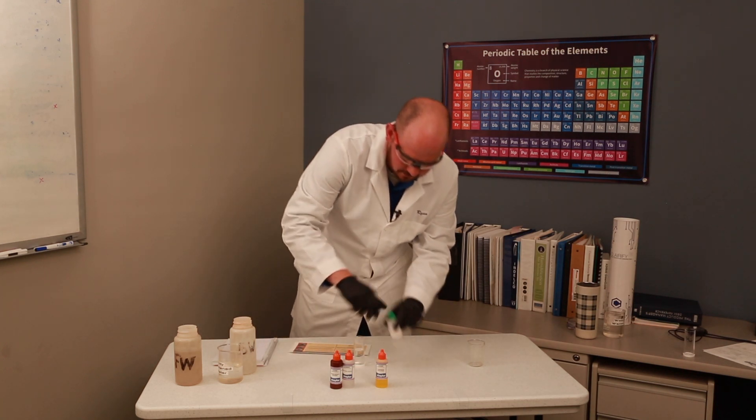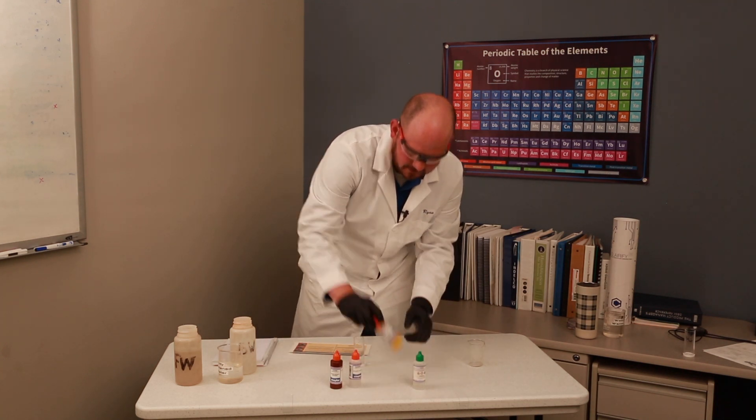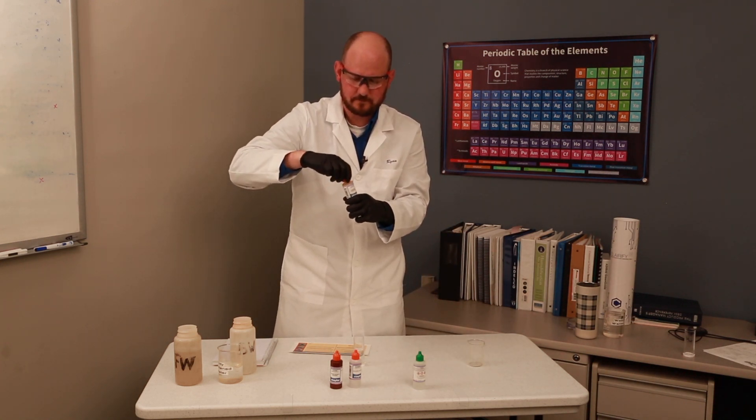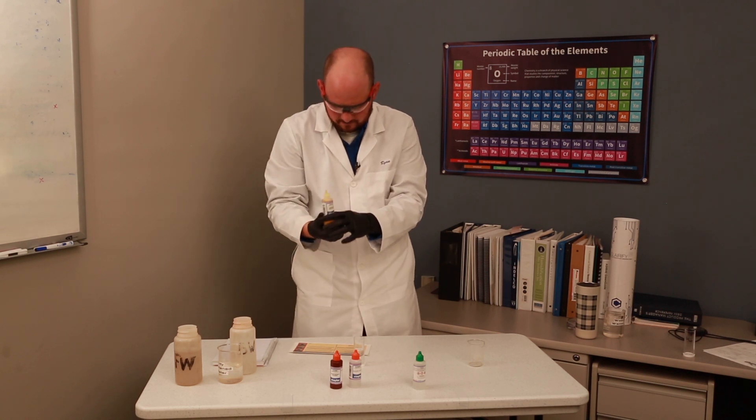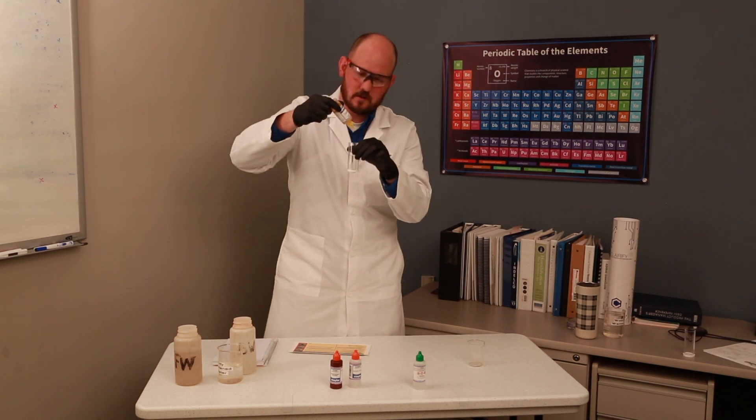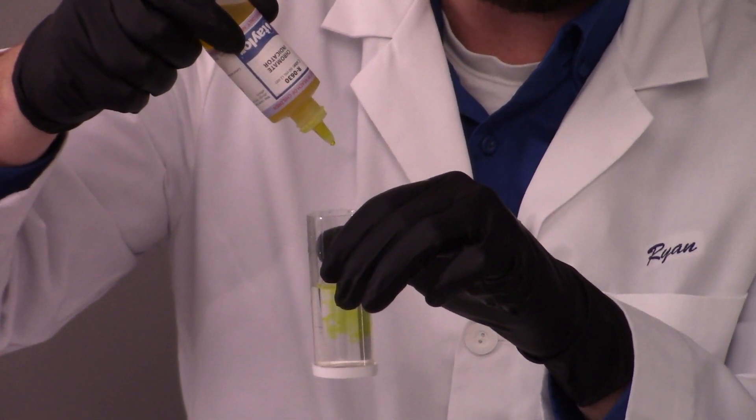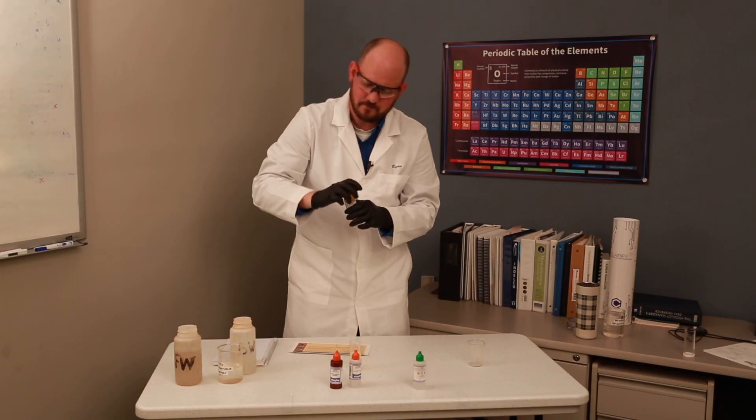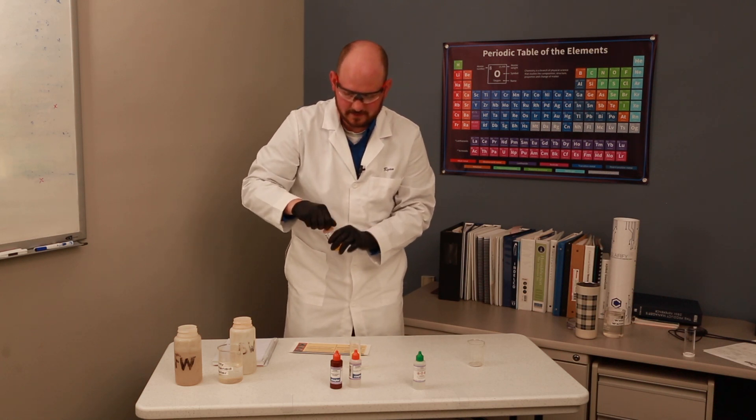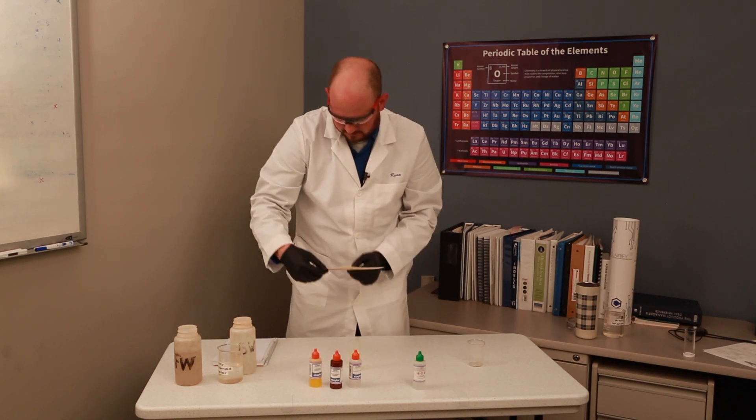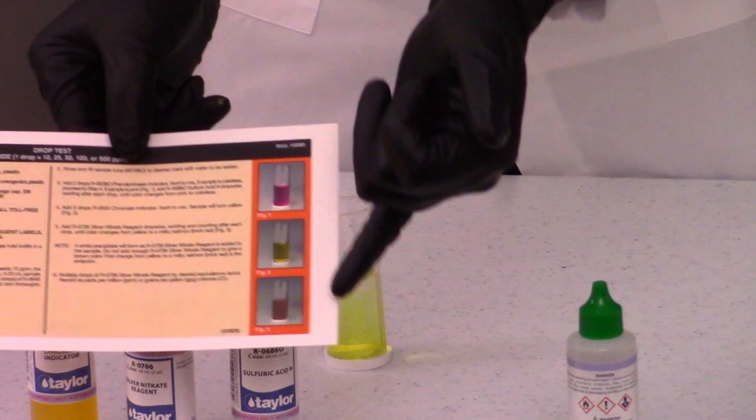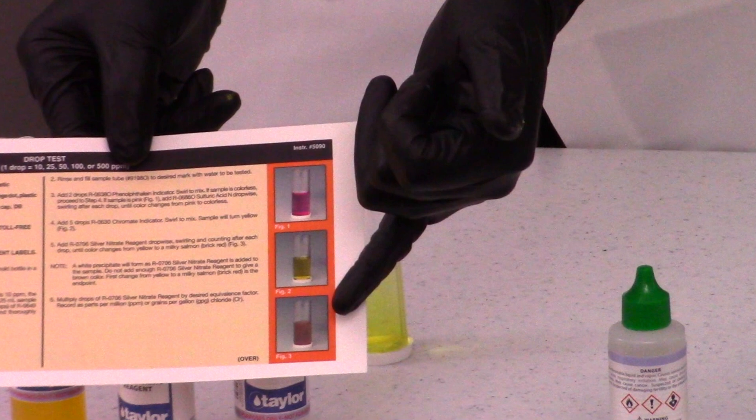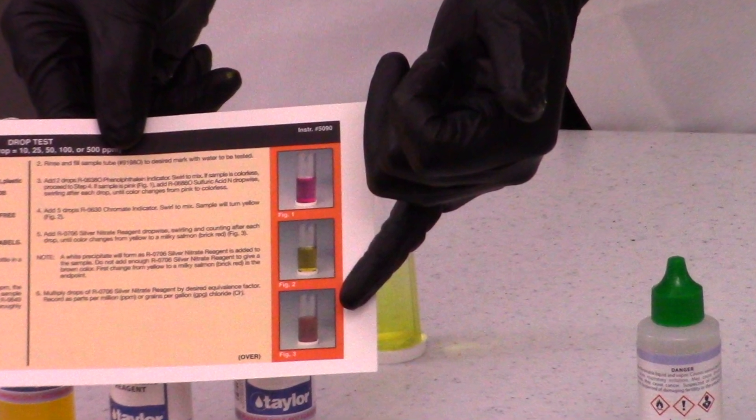Next, I'm going to add my chromate indicator, which is this yellow-colored fluid. Adding five drops. You'll notice the sample is now yellow. What we're trying to get this to - and it's very hard to depict, but it's shown in this bottom right photo - is a brownish salmon color, kind of murky, is what we're looking for it to change to.